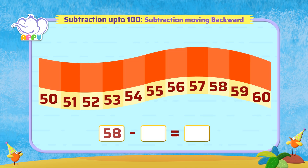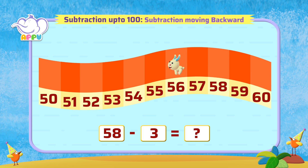58 minus 3. Count backwards by 3, which is 57, 56, 55. The answer is 55. Sensational!